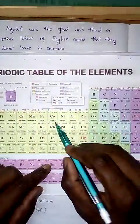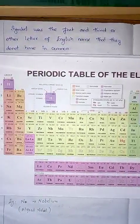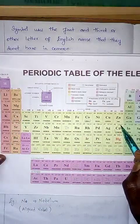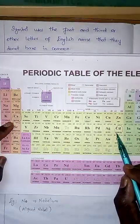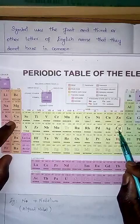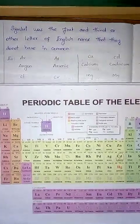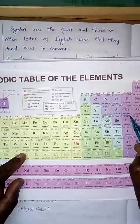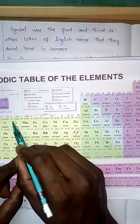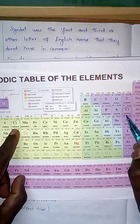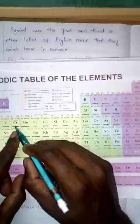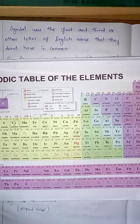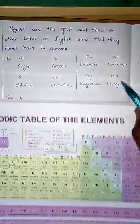Calcium is Ca and cadmium is also Ca, so the first two letters are the same. Since Ca is already used for calcium, the third letter is chosen for cadmium, giving Cd. For chlorine and chromium, both start with Ch — the third letter L gives Cl for chlorine and R gives Cr for chromium.